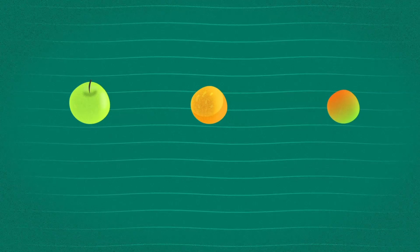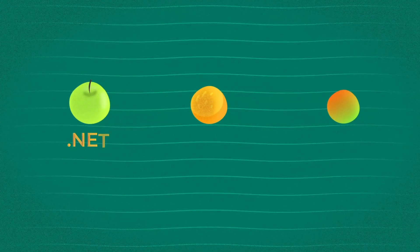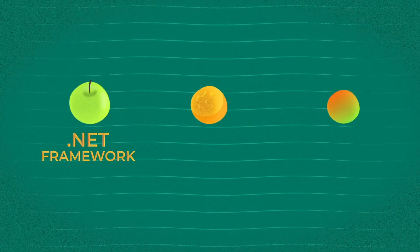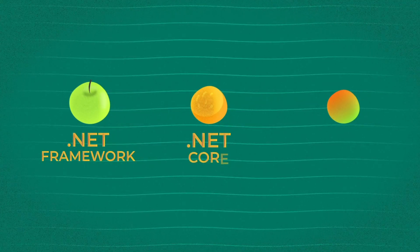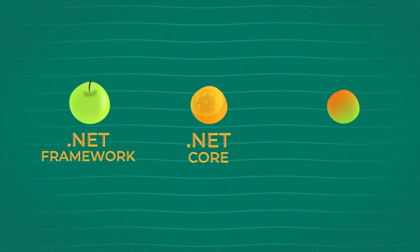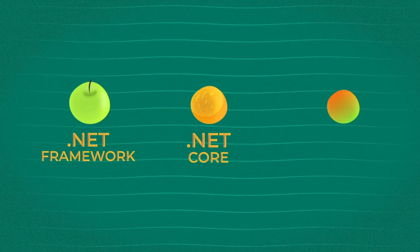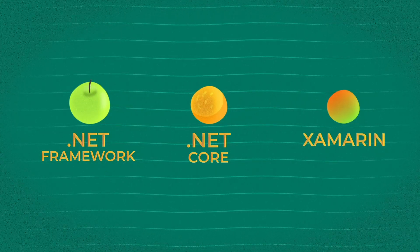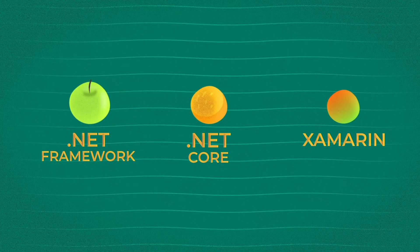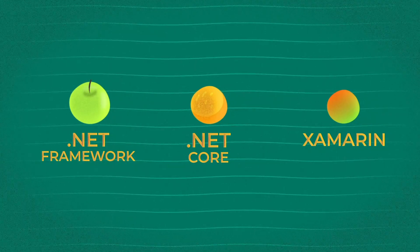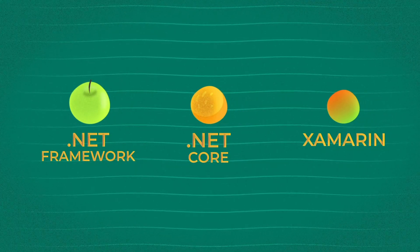Here are the family members. The old one, called .NET Framework. And his younger brother, .NET Core. The last but not least component is Xamarin, their relative. Let's take a closer look at every component.